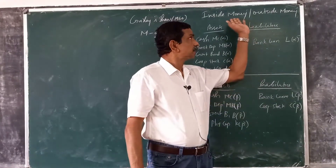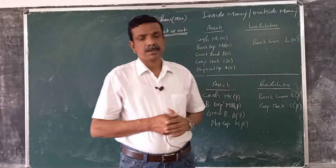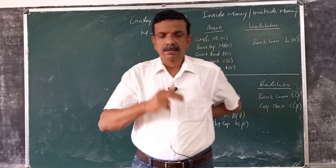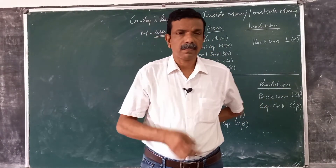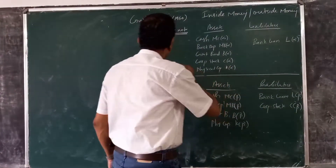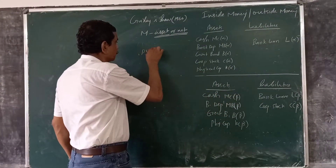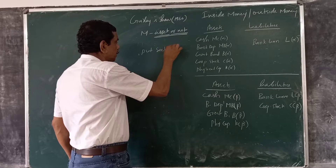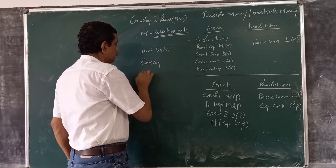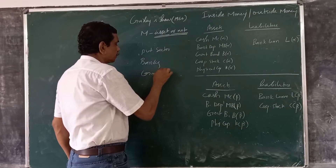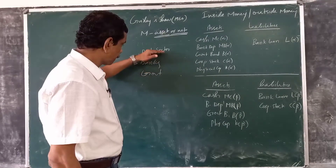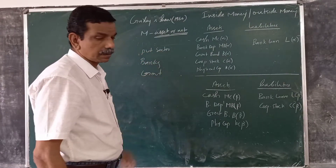To explain the distinction between inside money and outside money, we divide the economy into three sectors: the private sector, the banking sector, and the government sector.